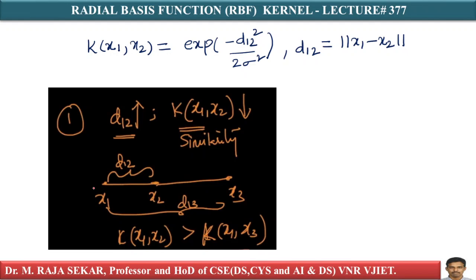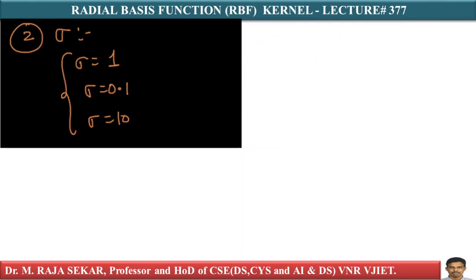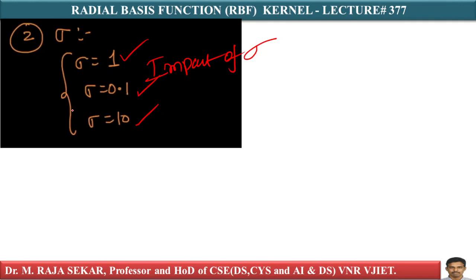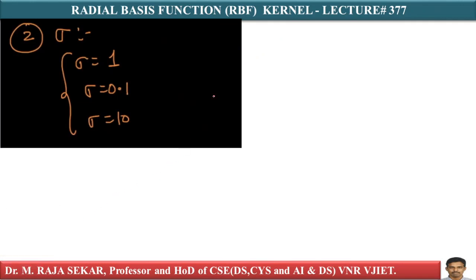That is the first observation: as distance increases, kernel value decreases. The second observation is the impact of sigma. Let's assume sigma equals 1, sigma equals 0.1, and sigma equals 10. What happens when I change the sigma value? We will try to understand its behavior by looking at some plots.